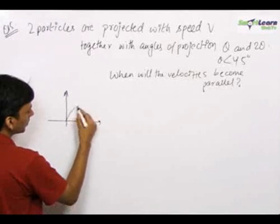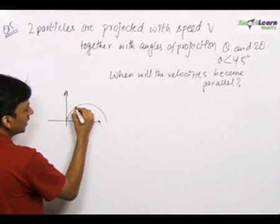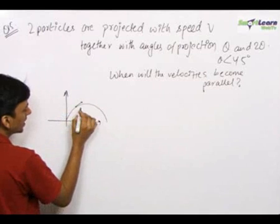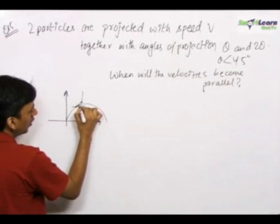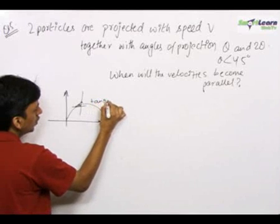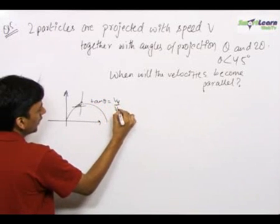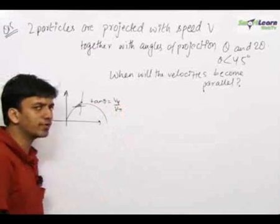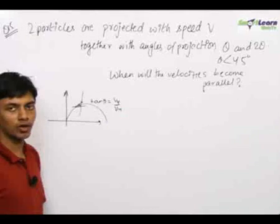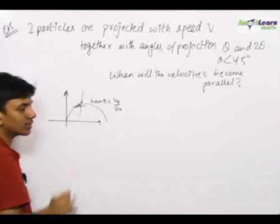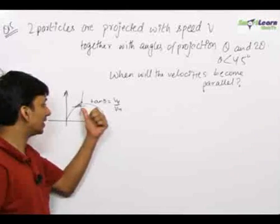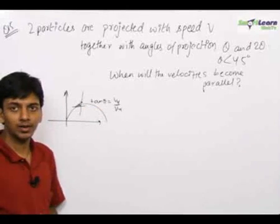So for both the particles, the direction which the velocity makes at any point can be gauged by finding out tan theta, where tan theta is equal to vy by vx, where vy is the y component of the velocity of the particle at that time and vx is the x component of the velocity of the particle at that time. So vy by vx for both the particles is same at that point. That means tan theta is same which means the two velocities are parallel.